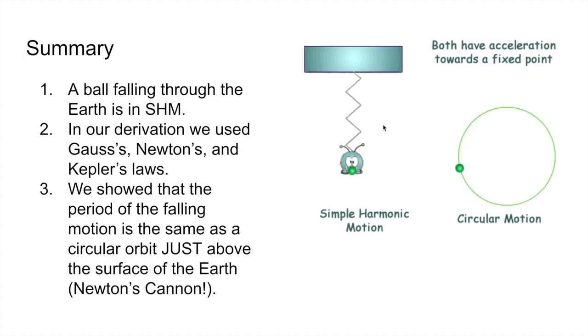So as a summary, we showed that a ball falling through the earth is in simple harmonic motion, because the force is opposite in direction with the displacement from the equilibrium, and it is also proportional to the magnitude of the displacement. In our derivation, we used Gauss's, Newton's, and Kepler's laws. And finally, we showed that the period of the falling motion is the same as a circle orbit just above the surface of the earth, which would be Newton's canon.